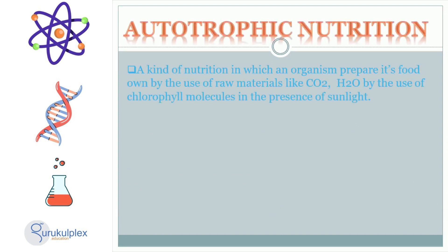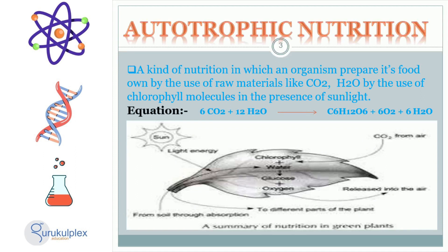Autotrophic nutrition is a type of nutrition wherein an organism synthesizes its own food from raw materials like carbon dioxide and water with the aid of sunlight and molecules of chlorophyll. This process is called the photosynthetic equation or the Calvin cycle. It converts six molecules of carbon dioxide and 12 molecules of water into one molecule of glucose, six molecules of oxygen and six molecules of water. Autotrophs have an essential role in the cycle of life and the environment because they are the only living organisms capable of producing their own food.